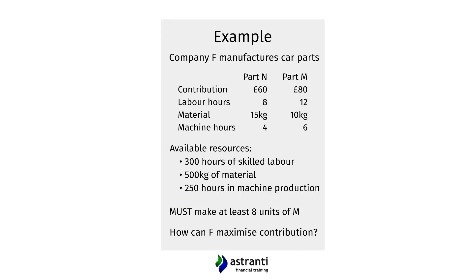If we haven't done linear programming before, we might start by suggesting different possible outputs of Part N and Part M — perhaps 10 units of Part N and 20 units of Part M, or maybe 20 units of Part M and 10 units of Part N. By asking this question, we've identified the first thing we need when setting up our linear programming model: an objective criterion that lets us see which suggestion is better, so we can find the solution that maximises our contribution.